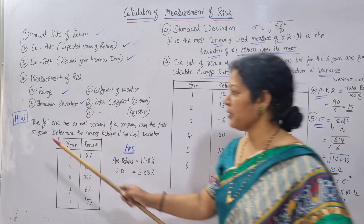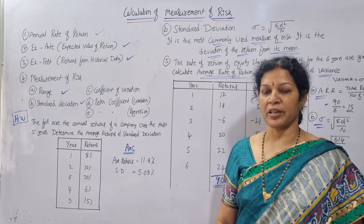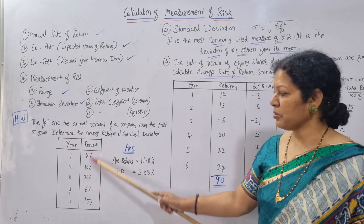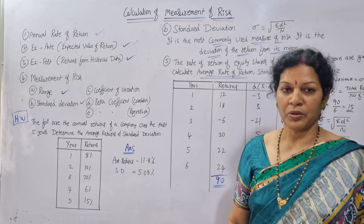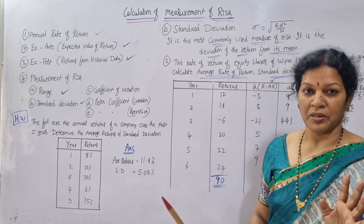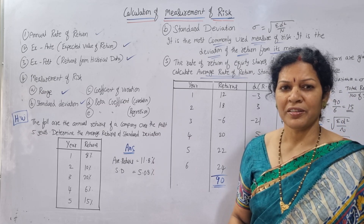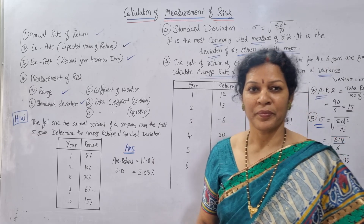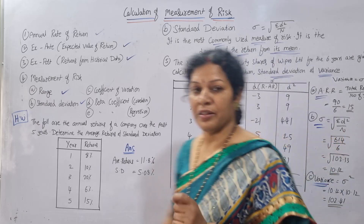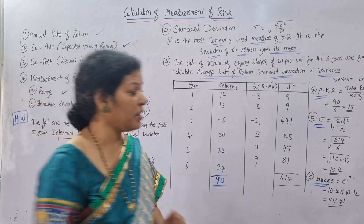One problem for homework: the following are the annual returns of a company over the past five years — determine average returns and standard deviation. First calculate average returns: total divided by number of years (5). Then create columns for d and d-square, write the formula standard deviation equals root of sigma d-square by n, and apply it. The risk is measured by the standard deviation you get.